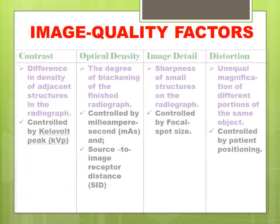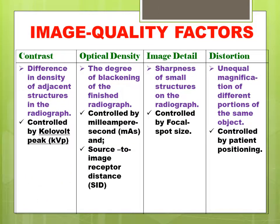Let's define the four principal image quality factors. First, contrast — the difference in density of adjacent structures in the radiograph, controlled by KVP.